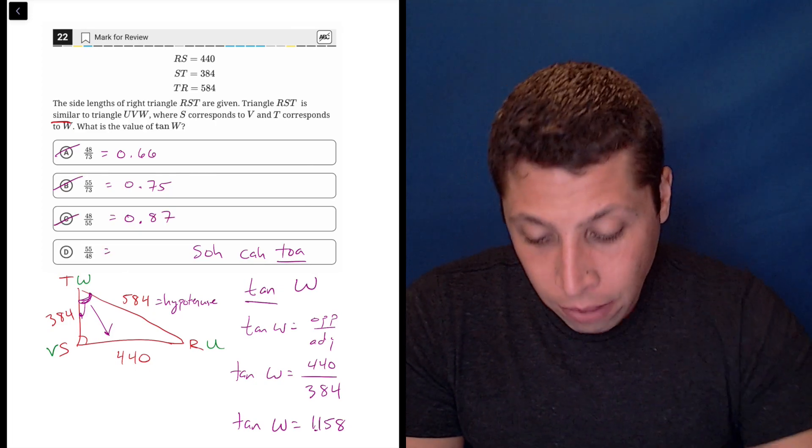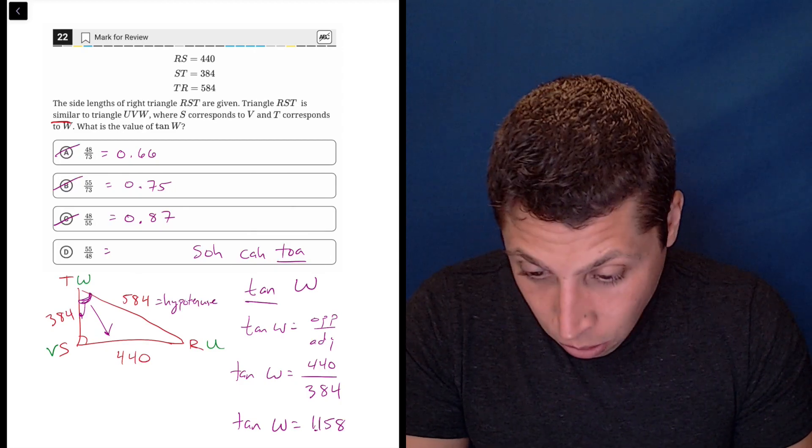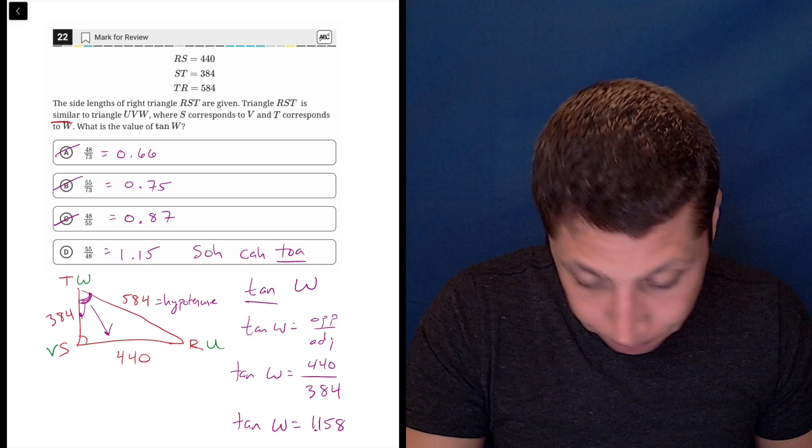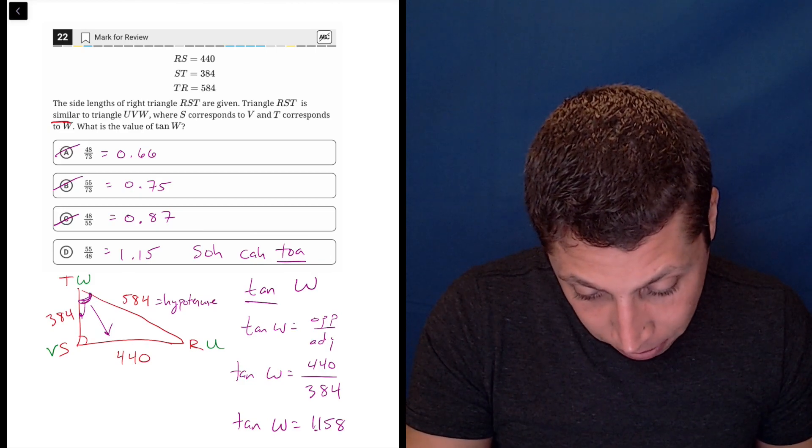And that leaves us with D, 55 divided by 48, which is 1.15, it's not quite the same, which is kind of strange to me. 55 divided by 48, but perhaps I did something wrong.